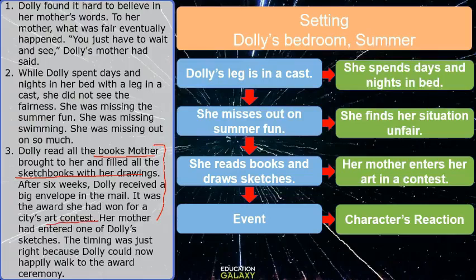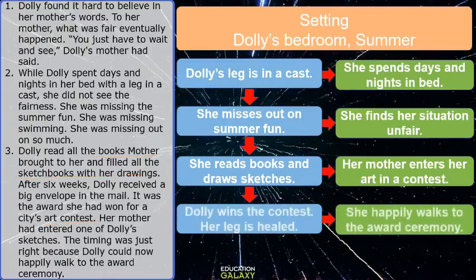Let's fill out the very last parts of the chart — event and character reaction. Dolly wins the contest. And her leg is healed. Think about the timing — she happily walks to the awards ceremony. So the timing is just right; she can now walk to the awards ceremony.